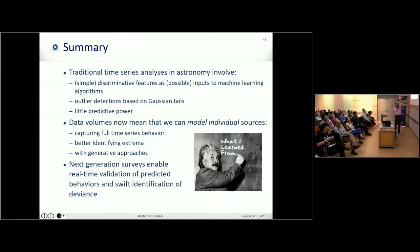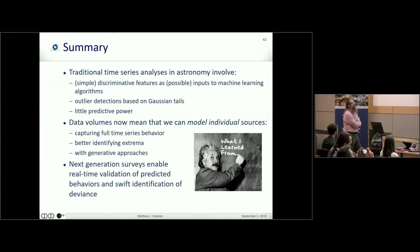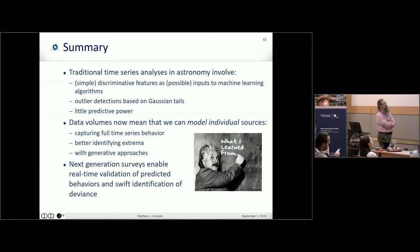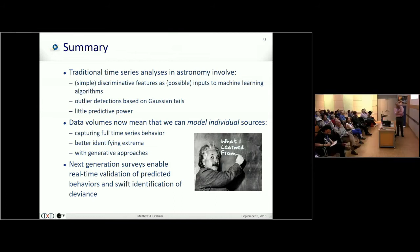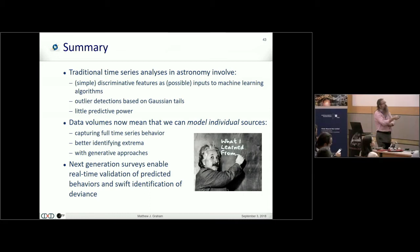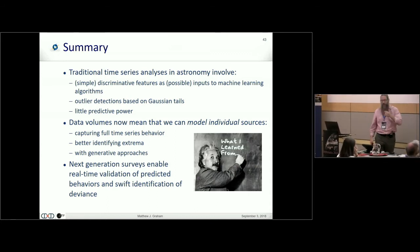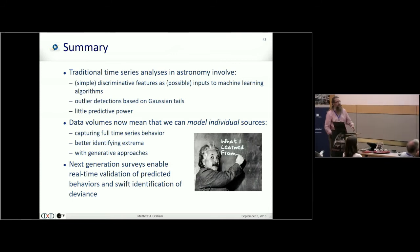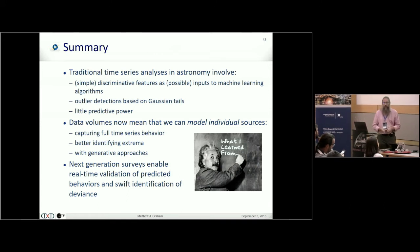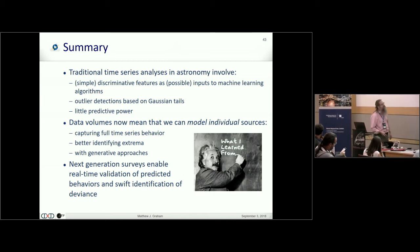So in summary, the sort of traditional time series analysis that we've done so far: simple discriminative features put into machine learning algorithms, outlier detections based on Gaussian tails, little predictive power. The volumes that we have now and the complexity we have now—we can look at individual sources and then model them, capturing full time series behavior, identifying extrema in a better way, and with generative approaches. And these next generation surveys, I think with this approach, will allow us to do this real-time validation of predicted behaviors and swift identification of deviance, because that's the sort of thing you then want to expend your more expensive resources on, those objects of interest which are the ones that are outside of nature, and maybe tell us more about the constitution of the universe to use that phrasing. I'll leave it there. Thanks.